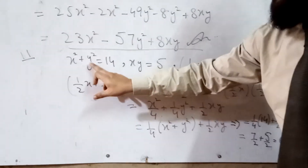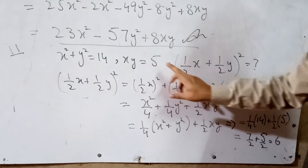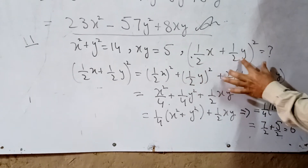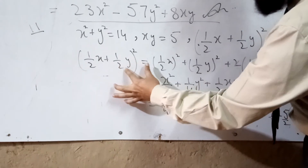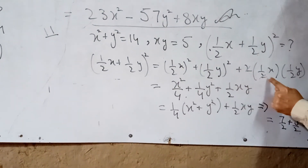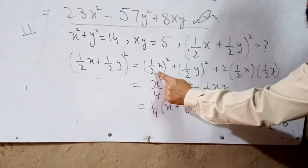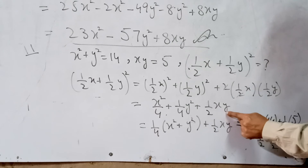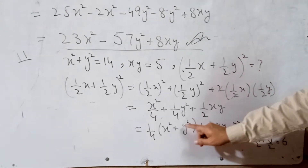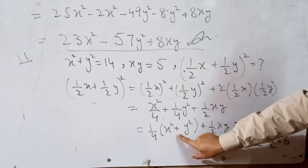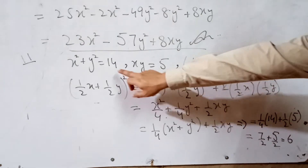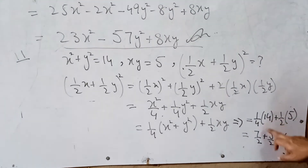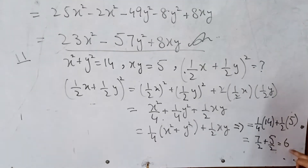Question 11: x² + y² = 14 and xy = 5. Find (½x + ½y)². Open the formula (a + b)² = a² + b² + 2ab: ¼x² + ¼y² + ½xy. Factor out ¼: ¼(x² + y²) + ½xy = 14/4 + 5/2 = 7/2 + 5/2 = 6.